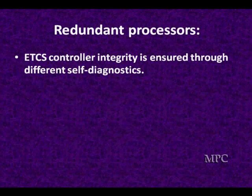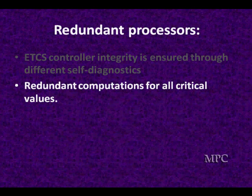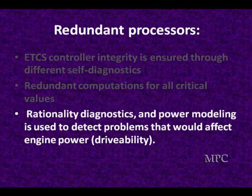The controller integrity is ensured through different self-diagnostics. Redundant computations means two processors look at the same data, make the same computations, and see if they come up with the same answers — exactly the way analog brake uses its redundant calculations. Rationality diagnostics and power modeling look at whether this matches what the engine power is expected to be and what problems can be detected. When it detects a problem, it will take corrective actions.